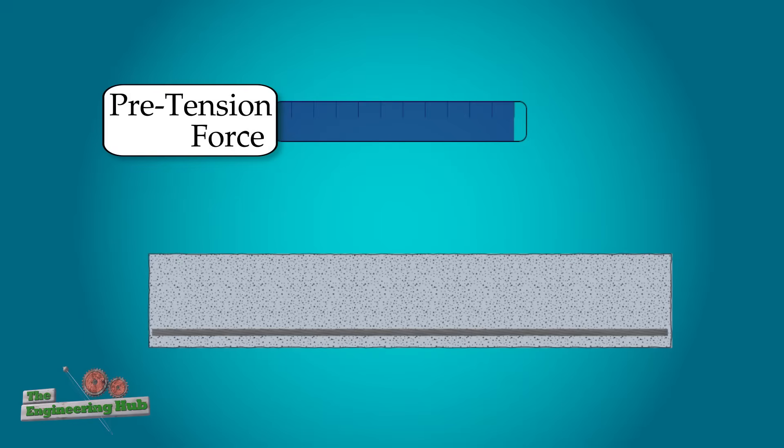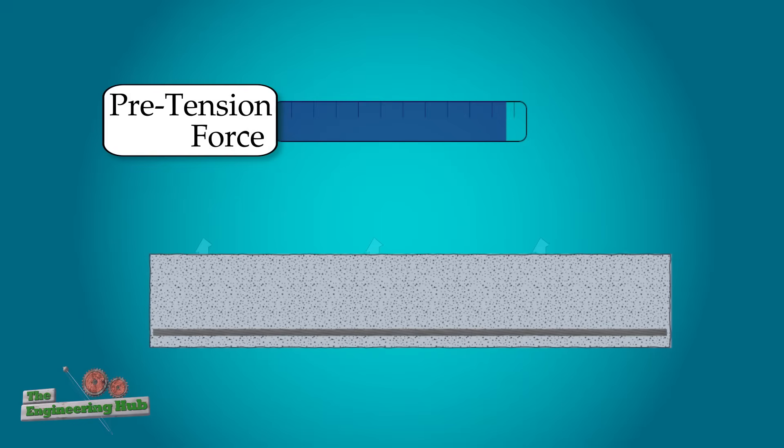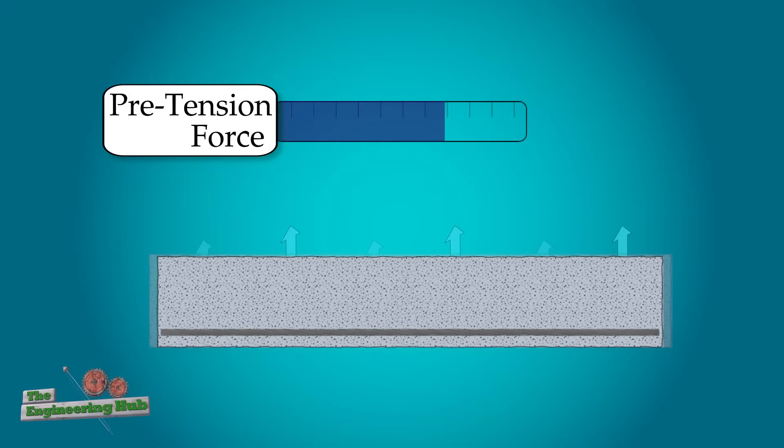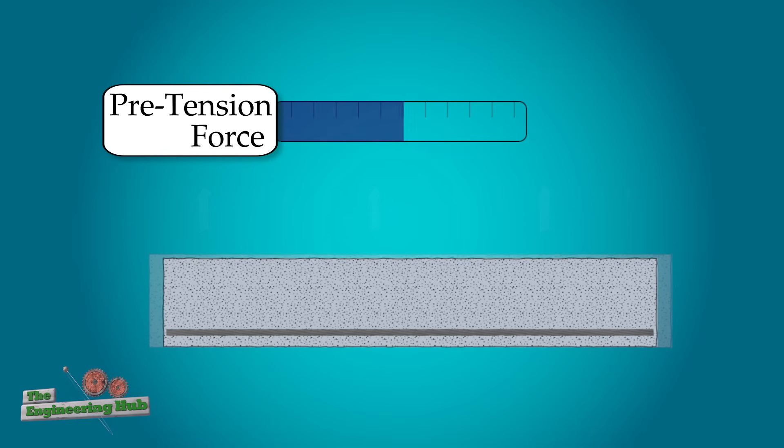Let's examine how this shrinkage would impact our pre-stressed beam. As the concrete shrinks, so too would the pre-stressed steel bonded to it, which reduces the tension force in the steel and thus reduces the pre-stressing load.